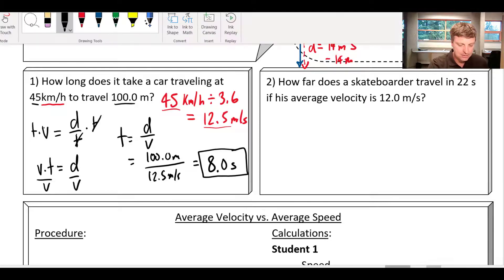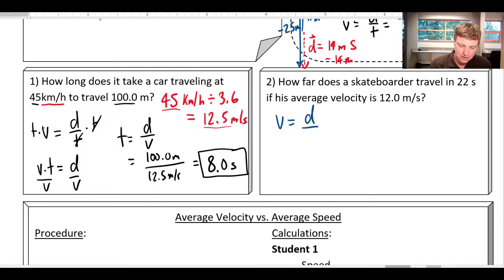All right. And last example, we've got a skateboarder traveling. How far does a skateboarder travel in 22 seconds if his average velocity is 12 meters per second? So again, starting with our formula, V equals D over T. This time I want to isolate for D.